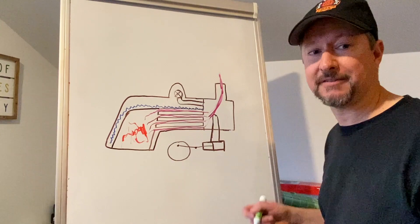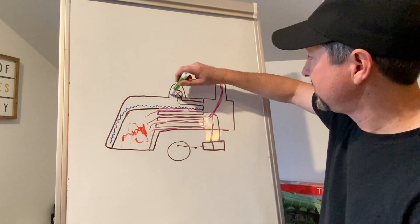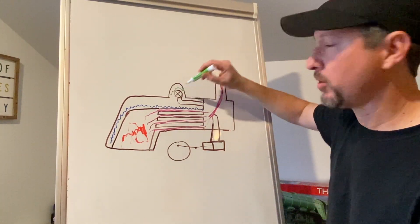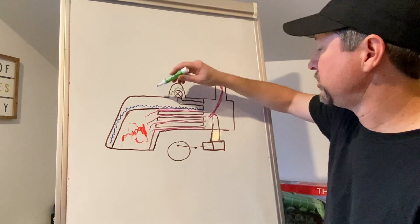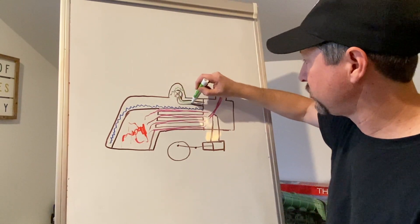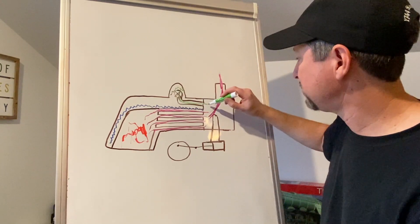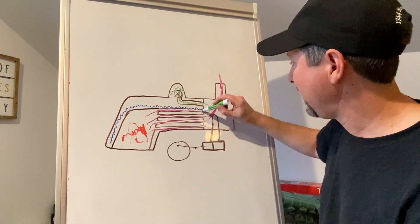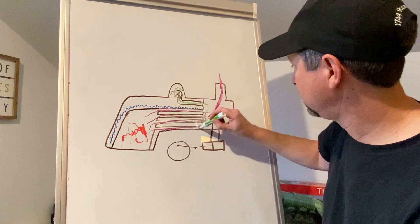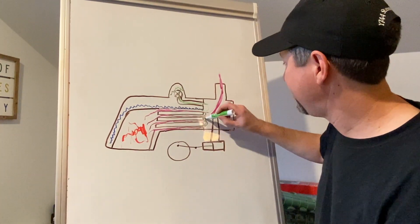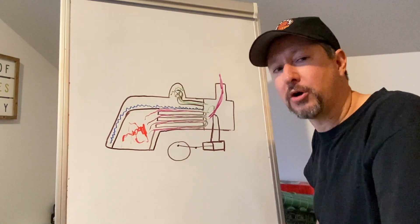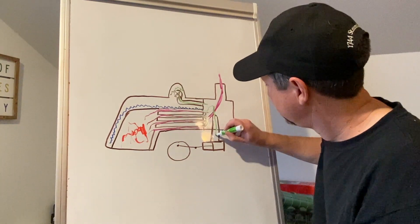Now let's look at the steam side of things. Steam collects in the steam dome at the top of the boiler — on many older locomotives, this is where the throttle valve is located. When the engineer opens the throttle, steam goes through the throttle valve and down into the dry pipe, which runs to the front of the locomotive into the smokebox. On a superheater locomotive, it runs back through superheater passages, then branches off into two branch pipes going down to the cylinders.